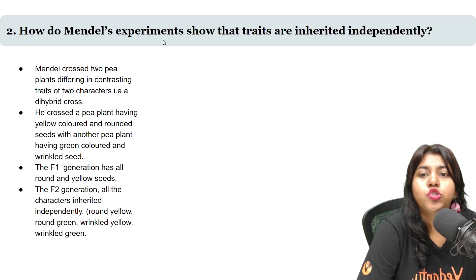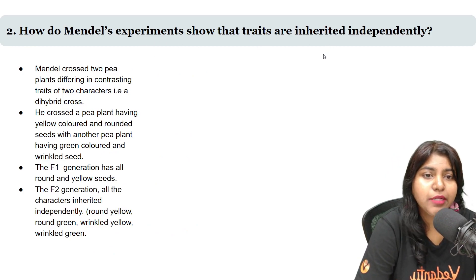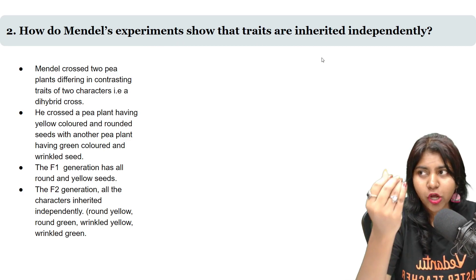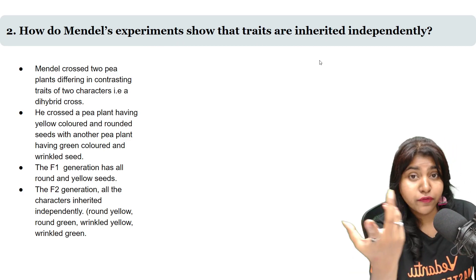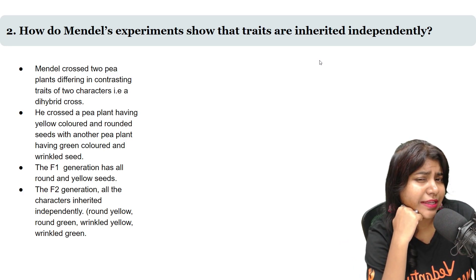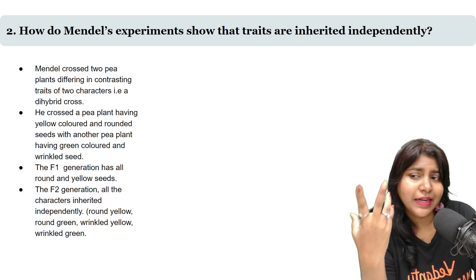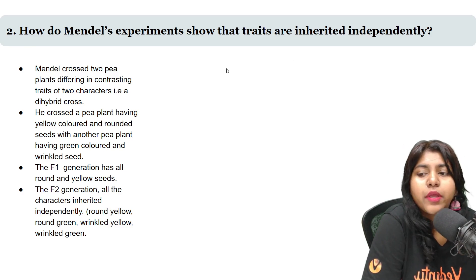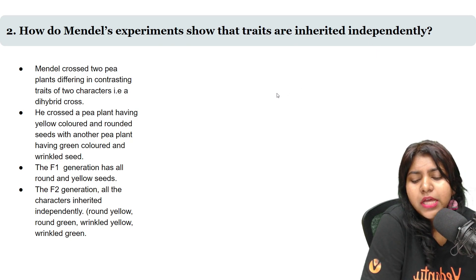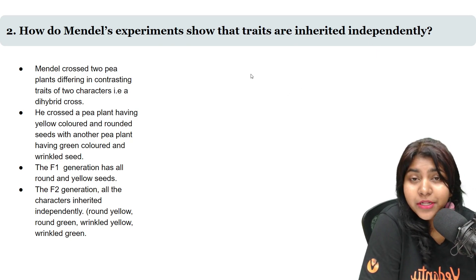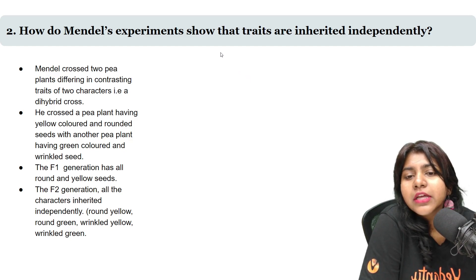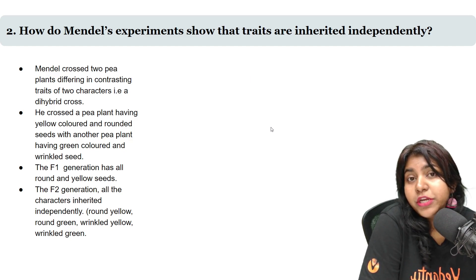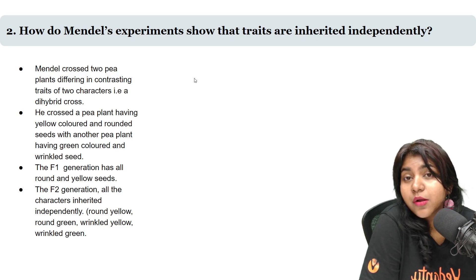How do Mendel's experiments show that traits are inherited independently? One of the traits is tall or round, yellow or wrinkled green. In these traits, how do we know how they are inherited? How do we understand independent inheritance from Mendel's experiments? That is how the factors show that one trait does not influence another.